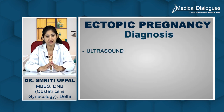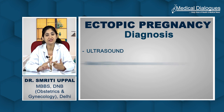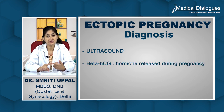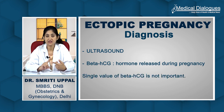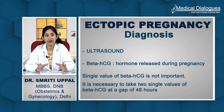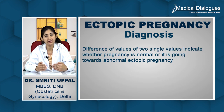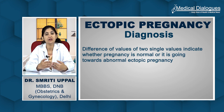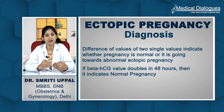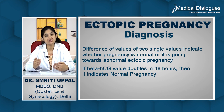Once the patient has the ultrasound done, we will simultaneously send a sample for beta-HCG. Beta-HCG is a hormone released during pregnancy. A single value of beta-HCG is not important — we have to take at least two serial values of beta-HCG at a gap of 48 hours. The difference in values will indicate whether the pregnancy is normal or heading toward an abnormal ectopic pregnancy. In a normal pregnancy, the beta-HCG value will almost double in 48 hours.